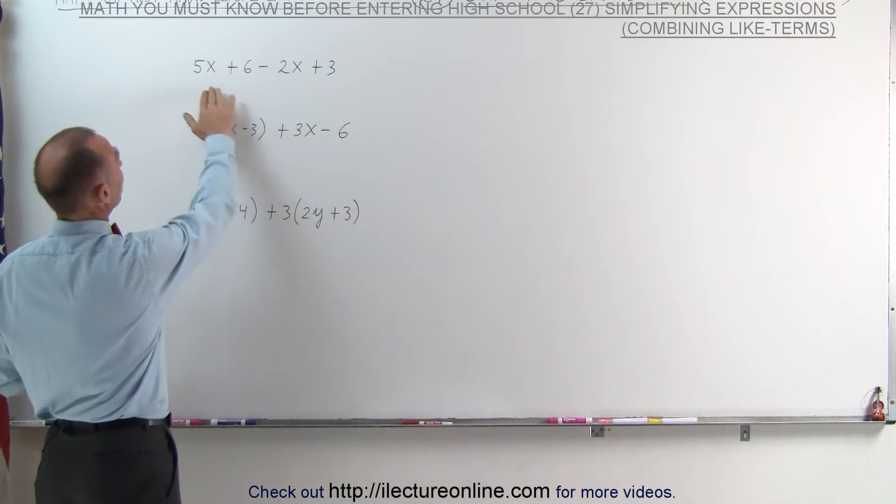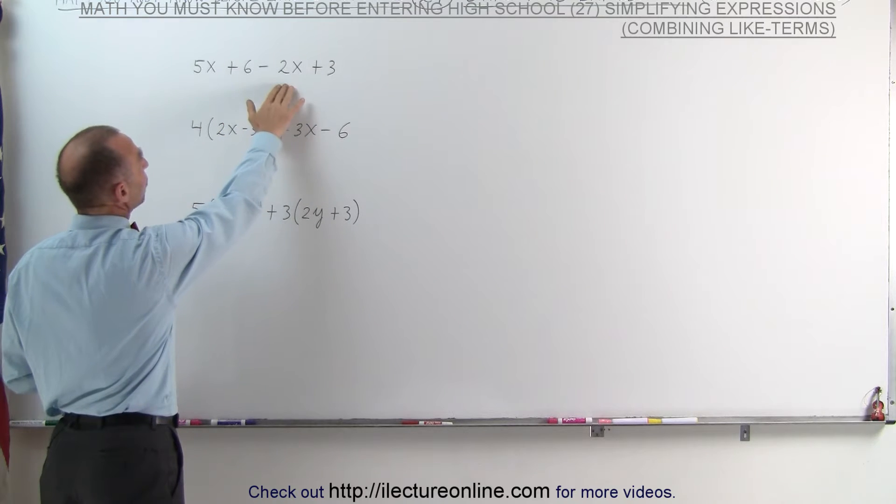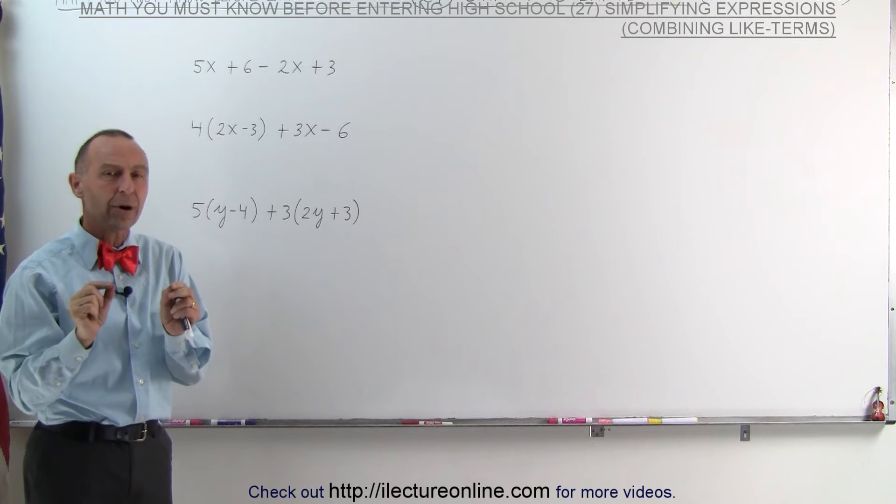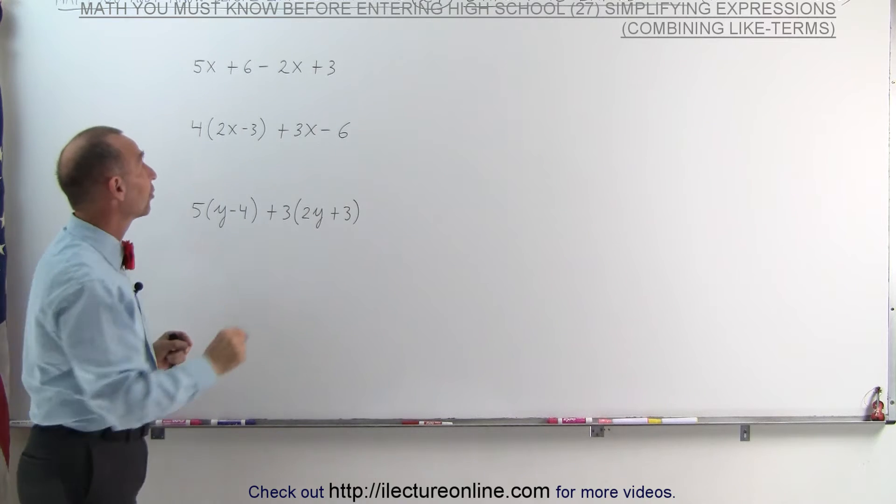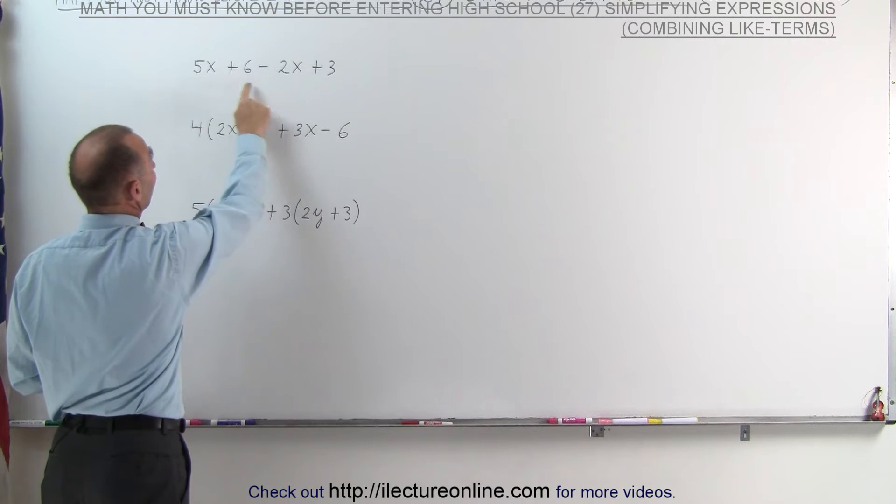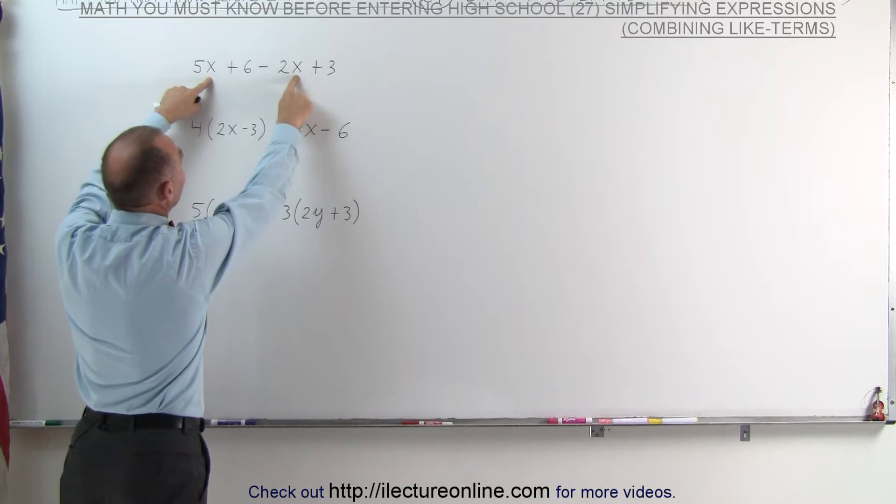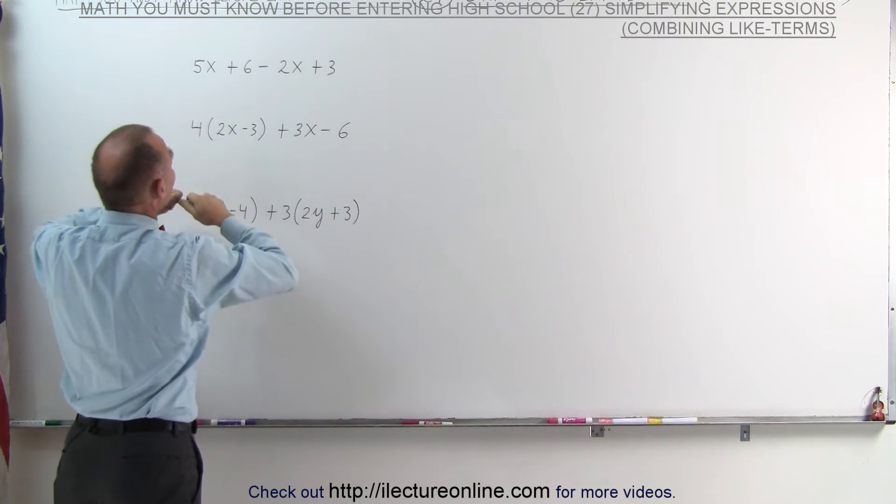Well, here we have an expression: 5x plus 6 minus 2x plus 3. Like terms are terms that have the letter parts exactly the same. So here we have a term 5x, there we have a term minus 2x. Since they both have the letter part x, these are considered like terms.